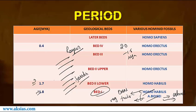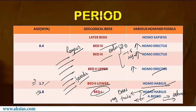Around 1.7 million years ago in Bed 2 lower, only Homo habilis is found living. In Bed 2 upper, Homo erectus has already evolved, and in Beds 3 and 4 Homo erectus continues evolving. Finally, after around 0.4 million years we find that Homo sapiens has evolved, and in later layers Homo sapiens sapiens appears.